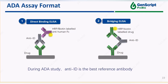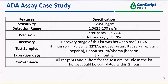In terms of ADA study, there are also two different formats. Direct binding ELISA is easy to develop, but anti-human IgG antibody will bring certain non-specific noise. Alternatively, bridging ELISA employs the drug as capture and detection antibody to achieve better specificity and sensitivity. Similar to the PK kit, ADA assay parameters also include sensitivity, detection range, precision, recovery rate, and expiration date.